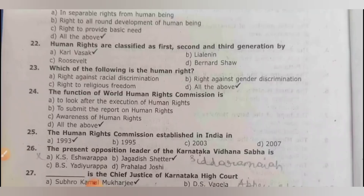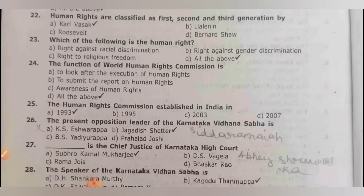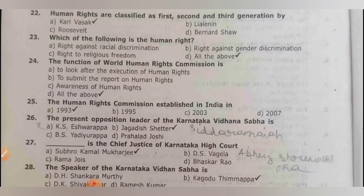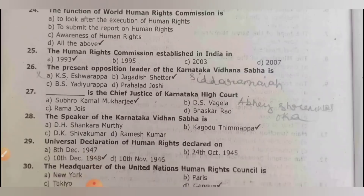Human rights mean all of the above. Human rights are classified into 1st, 2nd, and 3rd generation by Karel Vasak. The function of the world human rights commission is also all of the above. The human rights commission was established in India in 1993. The present opposition leader of Karnataka Vidhana Sabha is Siddaramaiah.